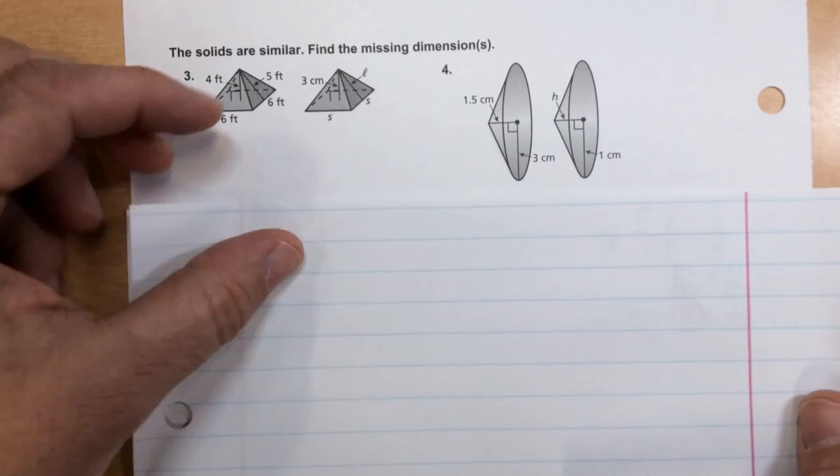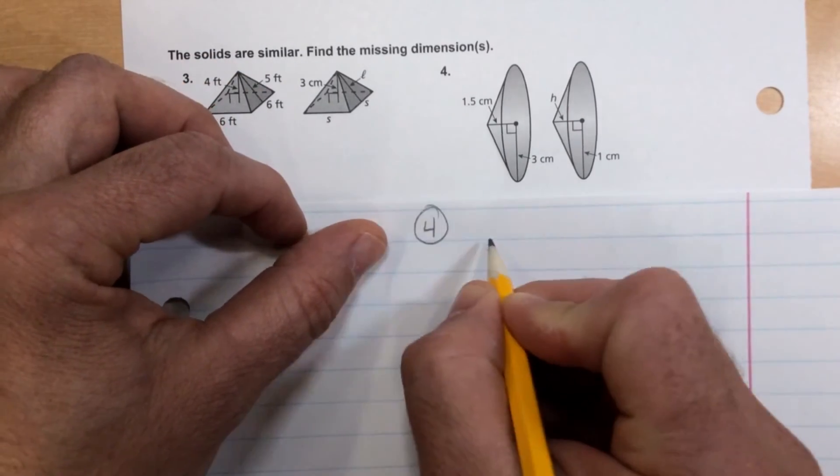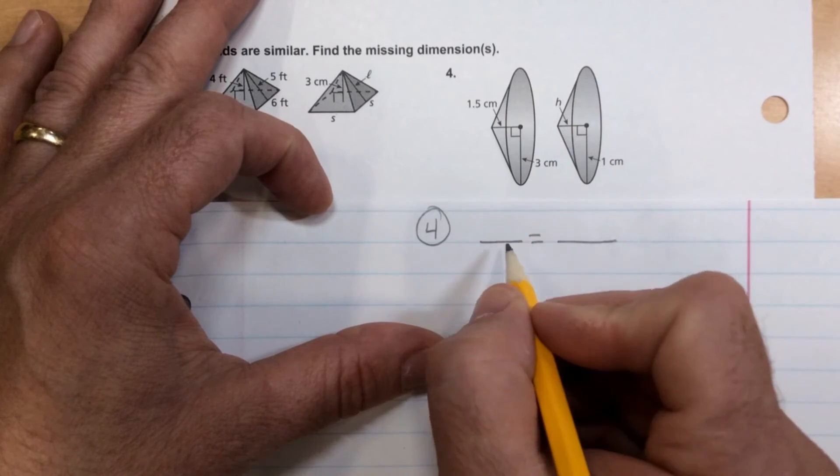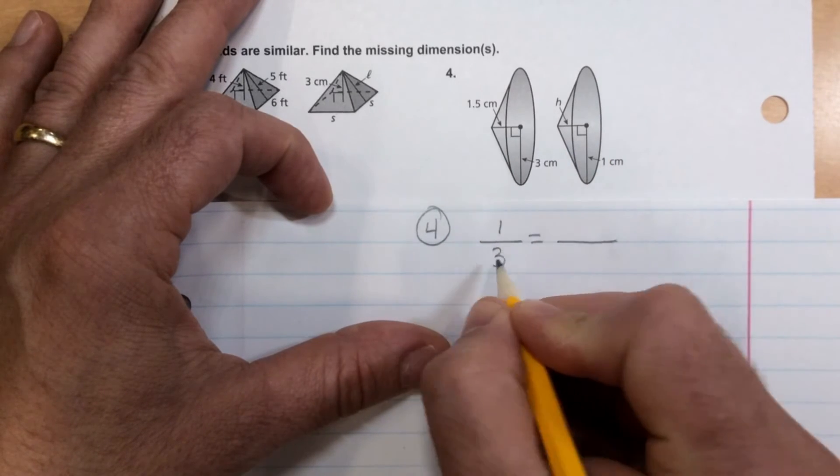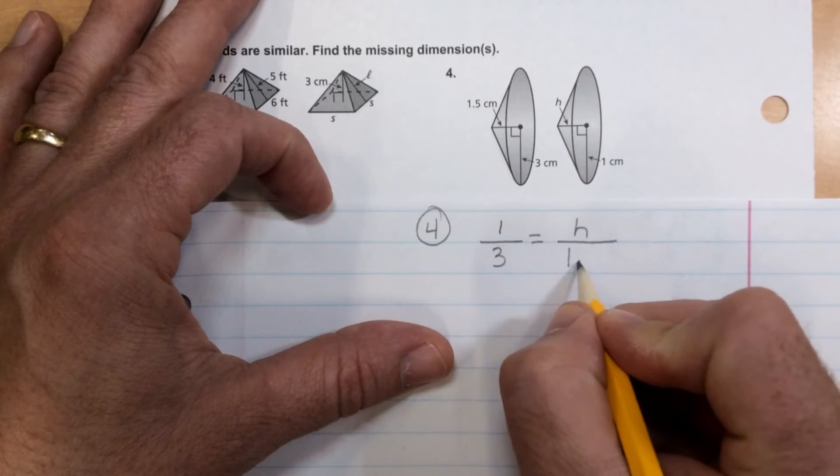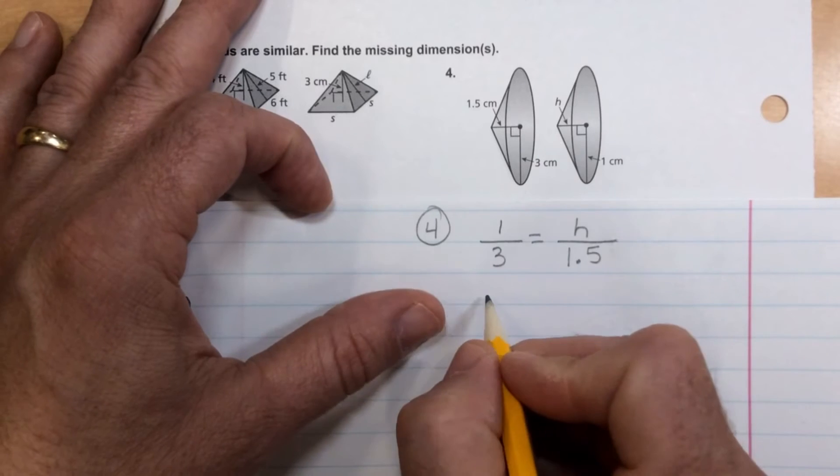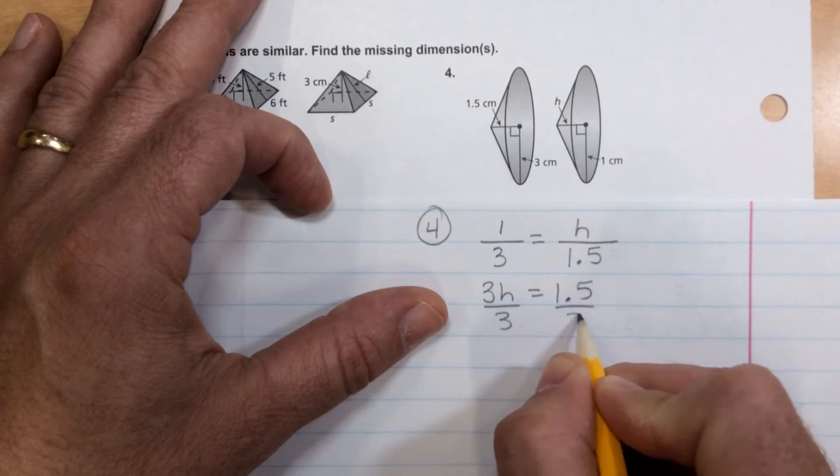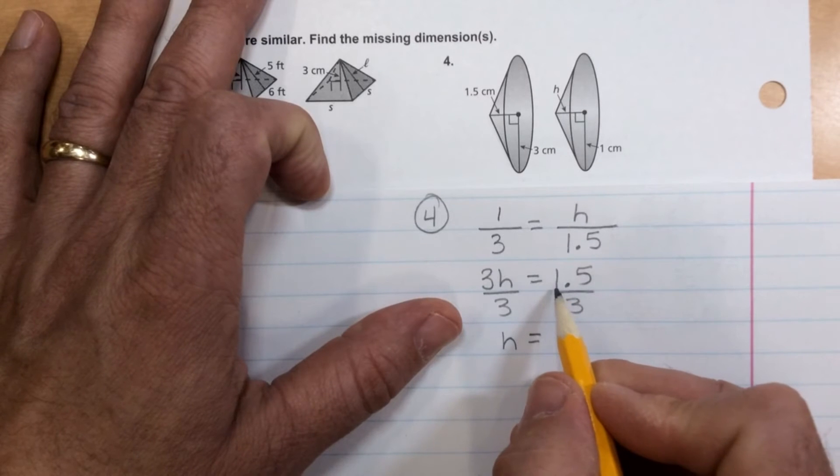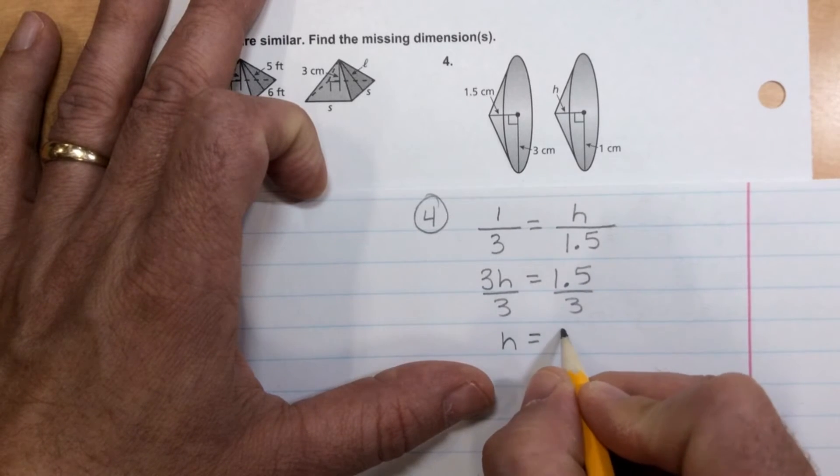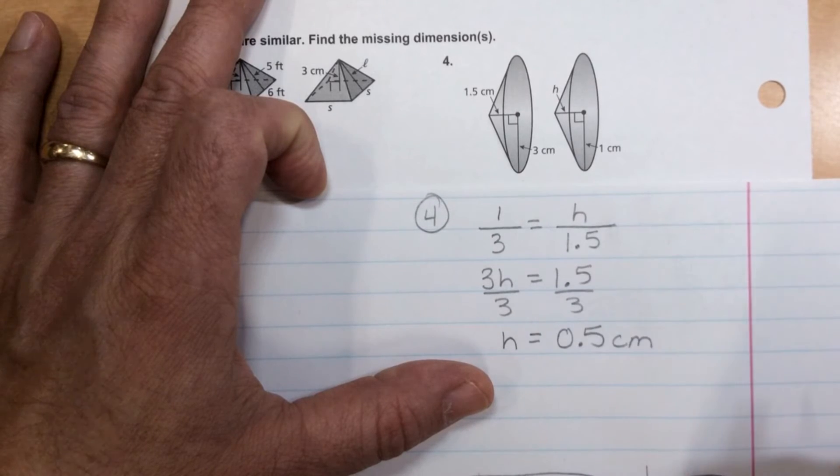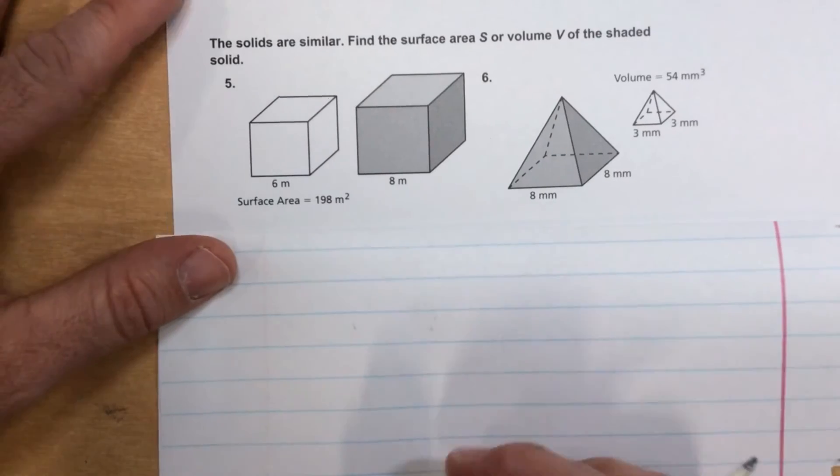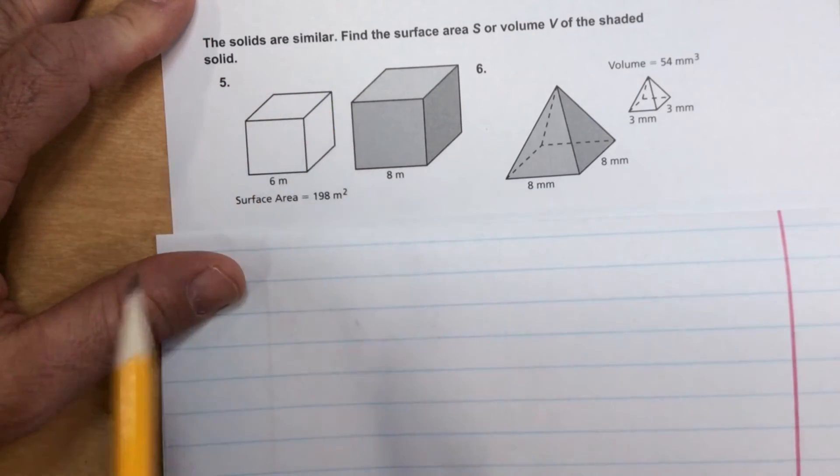Same type of problem, except there's only one missing dimension. So yay. Number four, so we'll just have a proportion set up like that. Smaller one, we've got radius over the larger radius. Smaller height over the larger height. H times three is 3H. One times 1.5 is 1.5. Dividing both sides by three. And we get H equals 1.5 divided by three is going to be a half. So 0.5 centimeters is the missing height. Again, this one, these two problems, they are telling us they are similar. So we know these will form proportions.